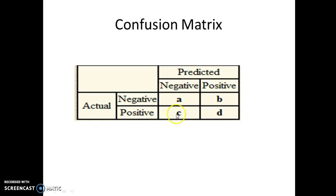C indicates the predicted value is negative but they are actually positive — so this is an incorrect prediction. B indicates that the predicted values are positive but actually they were negative, so it is a false prediction. D indicates that we have predicted it as a positive class and it is actually positive as well. So A and D are the correct predictions: A is predicted as negative and actually negative, and D is predicted as positive and actually positive.